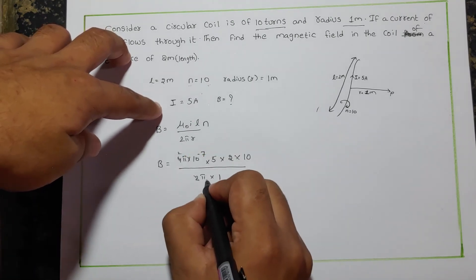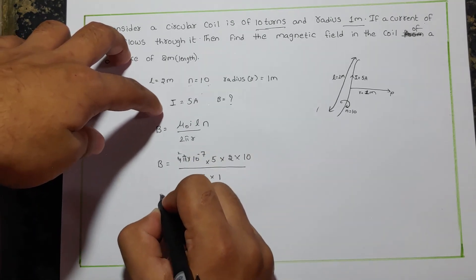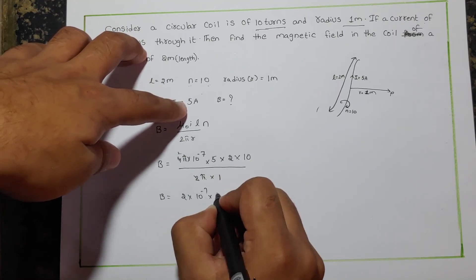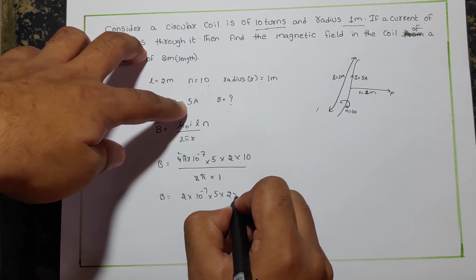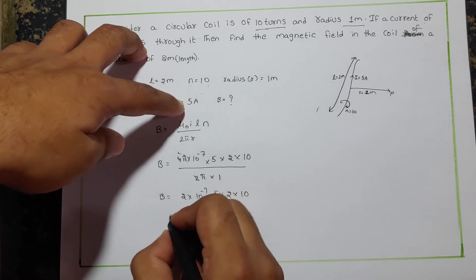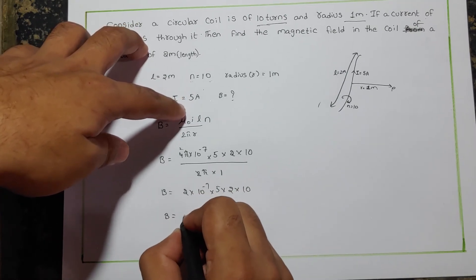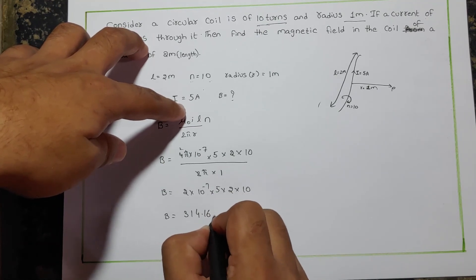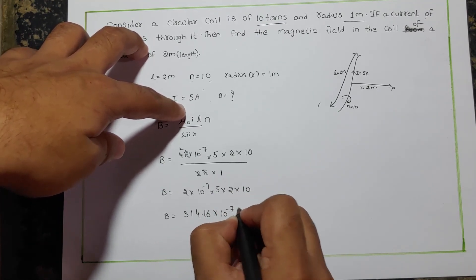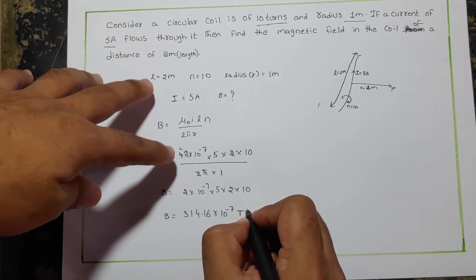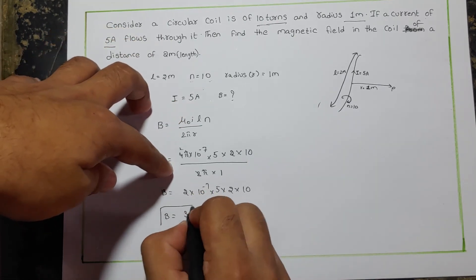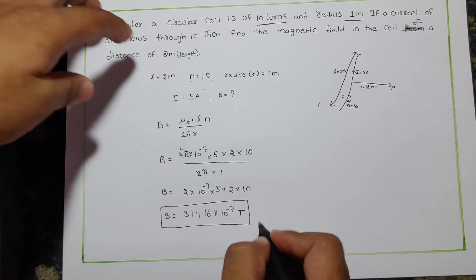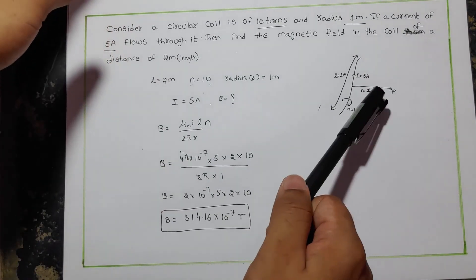Solving: B = 2 × 10⁻⁷ × 5 × 2 × 10 = 3.14 × 10⁻⁵ T, approximately 3314.0 × 10⁻⁷ T. This is the magnetic field linked with this coil.